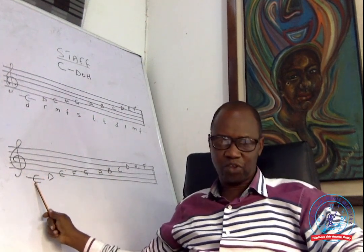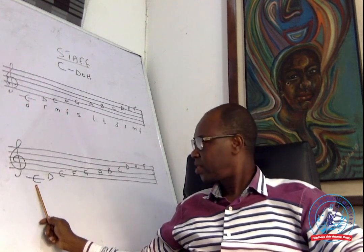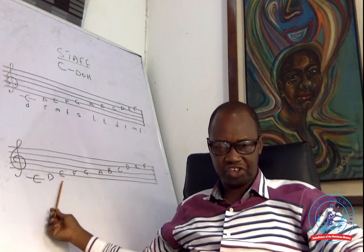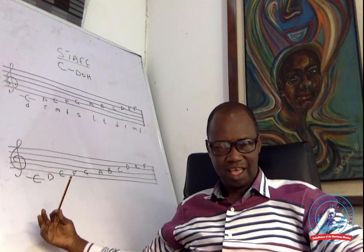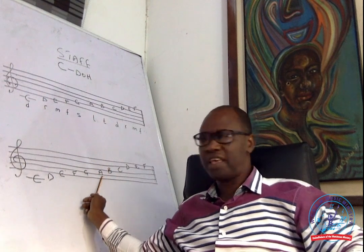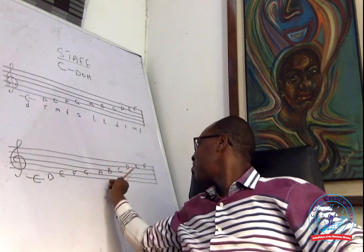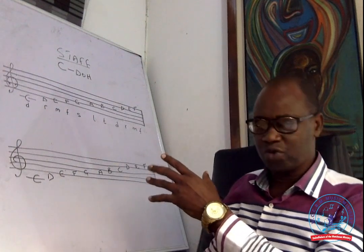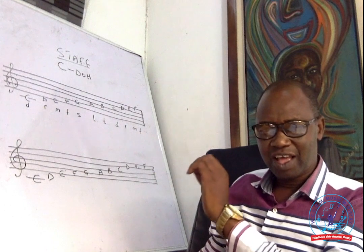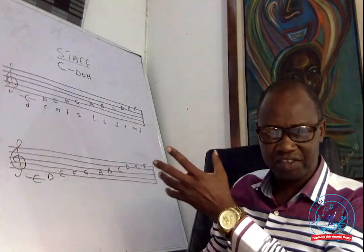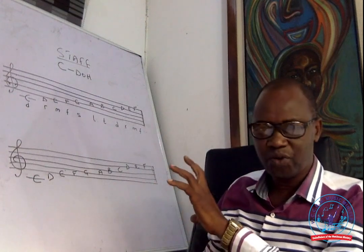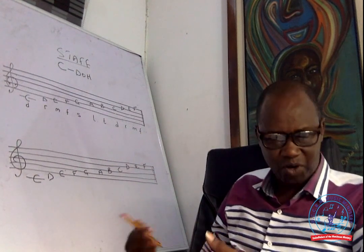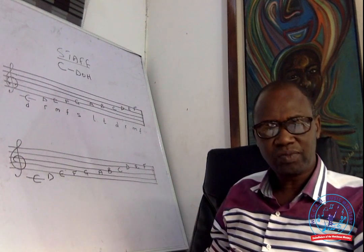Beginning from what we call the middle C — middle C is the first detached line under the staff — followed by D, then E, F, G, A, B, C, D, E, and F. It is important to view these letters of the staff and know where they appear, how they are written, where they are written, and the position where they occur. Know it, memorize it, and let it become part of you.